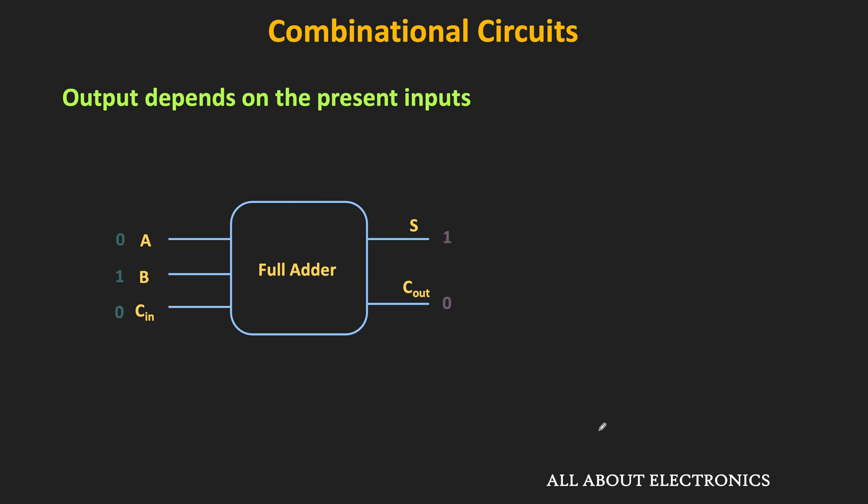On the other hand, if the inputs are 1, 1, 0, then the sum output will be 0 while the carry output will be 1. These outputs are available after the propagation delay of the logic circuit, but the output solely depends on the present input and has nothing to do with past inputs.